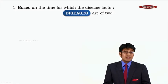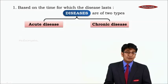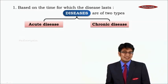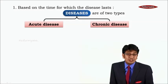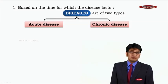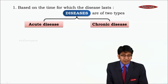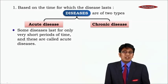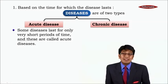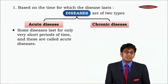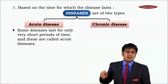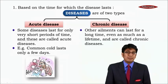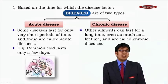Number one: based on the time for which the disease lasts, diseases are of two types — acute and chronic. Acute diseases are those which come and go. Acute diseases last for only very short periods of time and there are no major signs or symptoms. For example, the common cold lasts only a few days or a week.